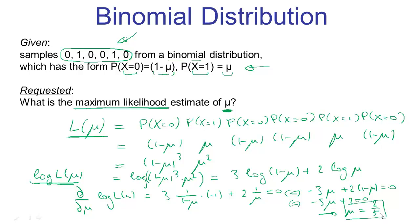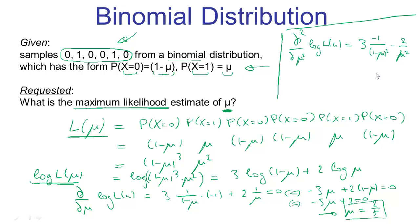Setting the derivative to zero doesn't confirm this is a maximum — it could be a minimum or saddle point. To verify it is a maximum, we take the second derivative of the log likelihood and confirm it is negative. In this expression, both terms are always negative, so the second derivative is less than or equal to 0. We have confirmed that the extremum is indeed a maximum, and two-fifths is our maximum likelihood estimate of mu for this set of samples.